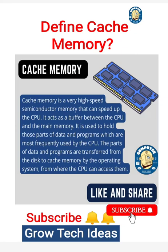It is used to hold those parts of data and programs which are most frequently used by the CPU. The parts of data and programs are transferred from the disk to cache memory by the operating system, from where the CPU can access them.